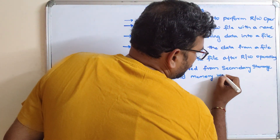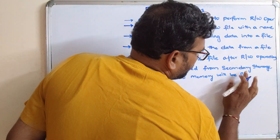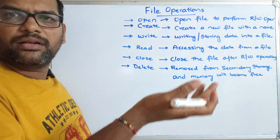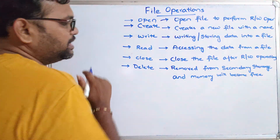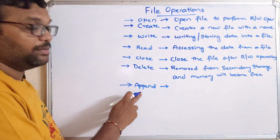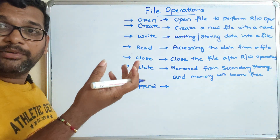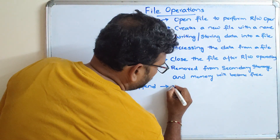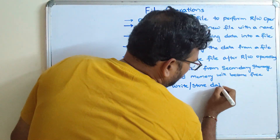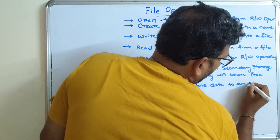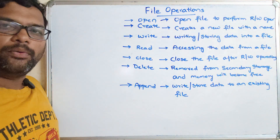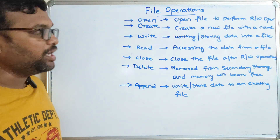When a file is deleted, memory will be freed and this free memory can be allocated for some other files. Apart from these operations, there is one more operation called append, which is similar to write operation. Append is used to write or store additional data to an existing file — to add a few more information to the existing content.